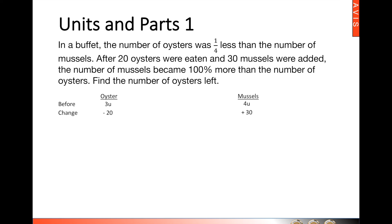Next, we need the after proportion. We were told that the number of mussels will then become 100% more than the number of oysters, which means the number of mussels will be 200% or twice of the oysters.